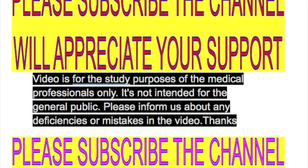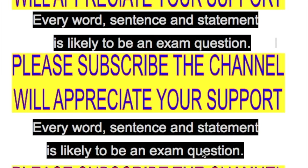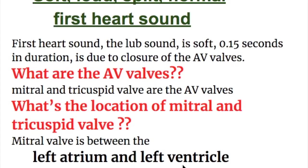In this video we will discuss the first heart sound. First we will discuss the normal first heart sound, then we will discuss the disorders which cause a soft first heart sound, a loud first heart sound, and a splitting of the first heart sound. The first heart sound is soft in nature and is 0.15 seconds in duration. It is longer in duration than the second heart sound, and is due to the closure of the AV valves.